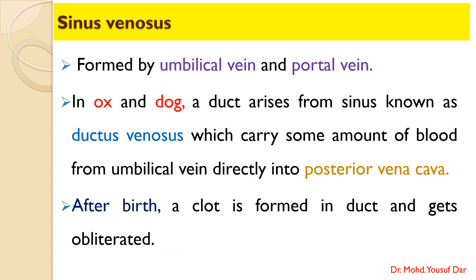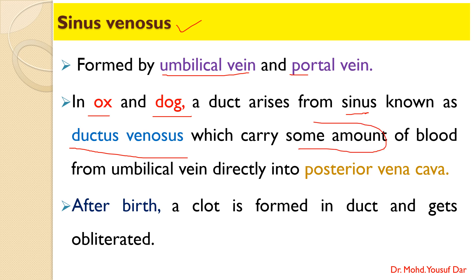Another term is the sinus venosus: the sinus venosus is formed by the umbilical vein and the portal vein. In the case of the ox and dog, a duct arises from the sinus venosus known as the ductus venosus, which carries some amount of blood directly from the umbilical vein into the posterior vena cava. After birth, a clot forms in the ductus venosus and it gets obliterated — the ductus venosus gets closed.